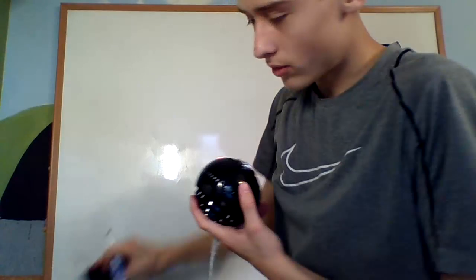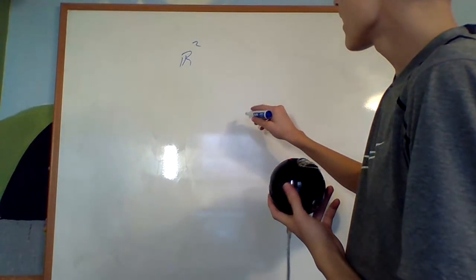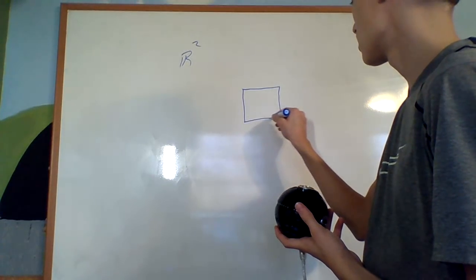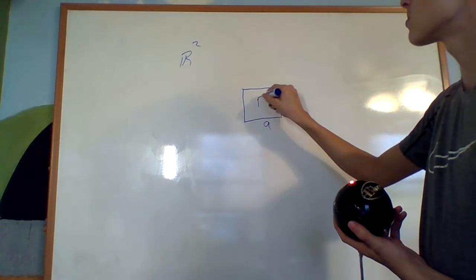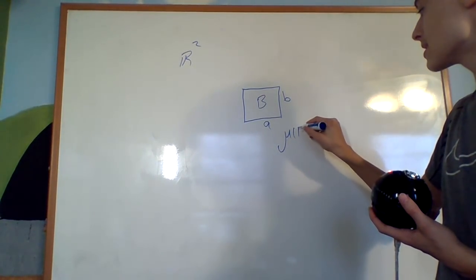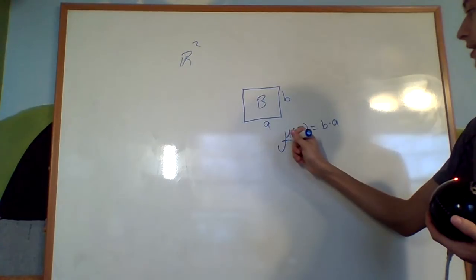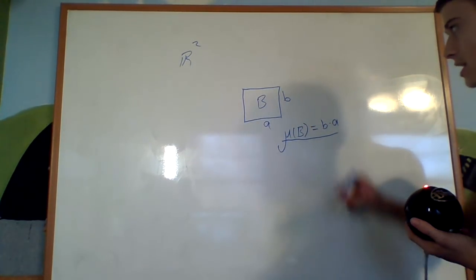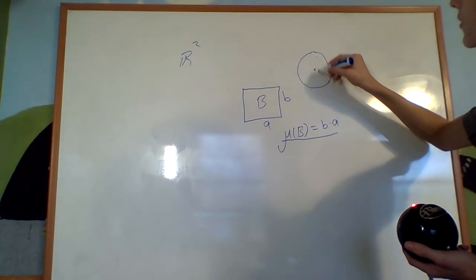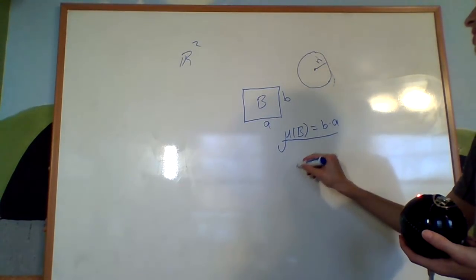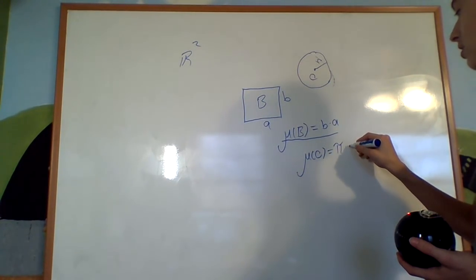For example, if we were to take R², two-dimensional space, and I had a box that is A by B, the measure of this box B would be B times A. That's what you'd expect. And another thing you'd expect is that if I had a circle with center there and radius R, you'd expect the measure of that circle to be pi R squared.